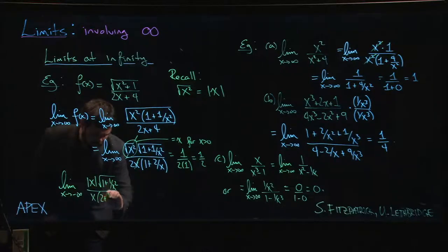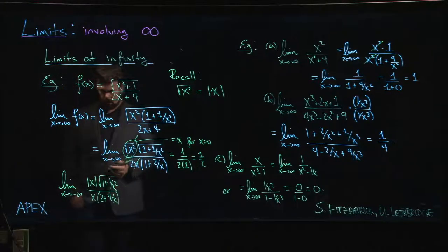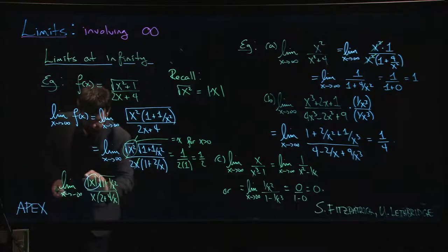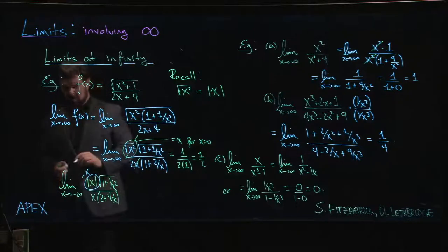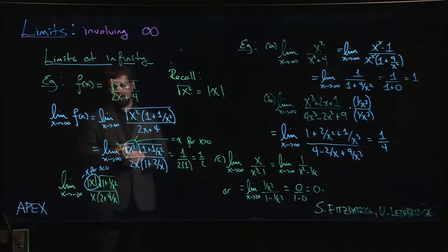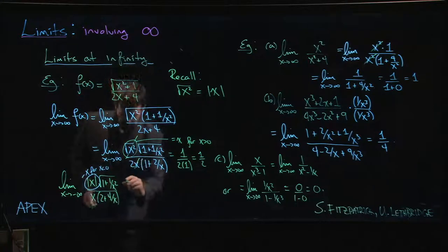Maybe I'll leave the two in this time, doesn't really matter where you put it. All right, since x is going to minus infinity, absolute value of x is no longer x. Absolute value of x is minus x, since x is negative.